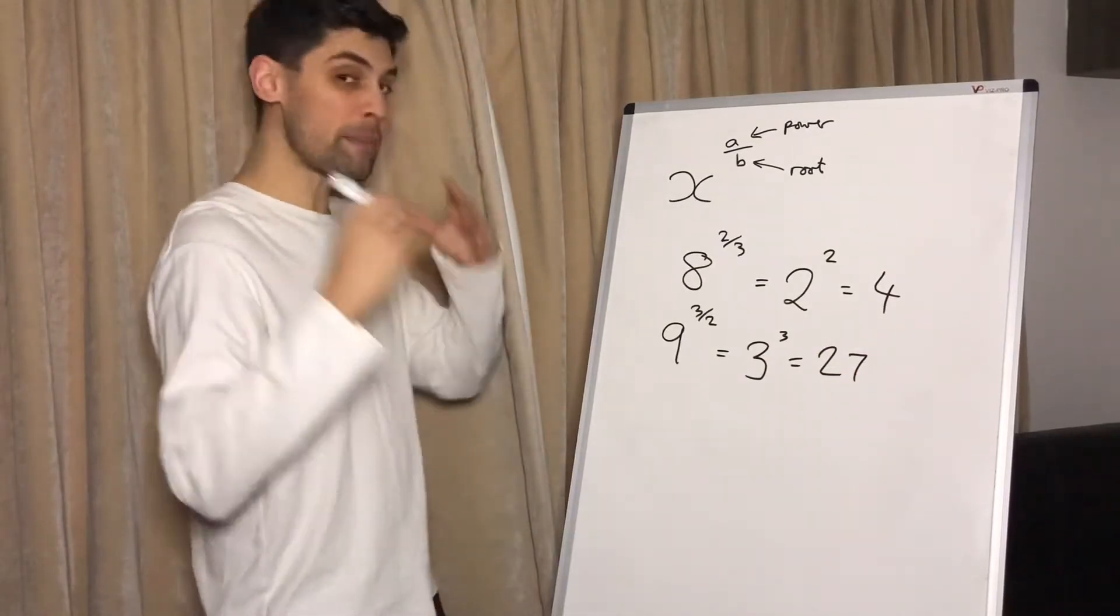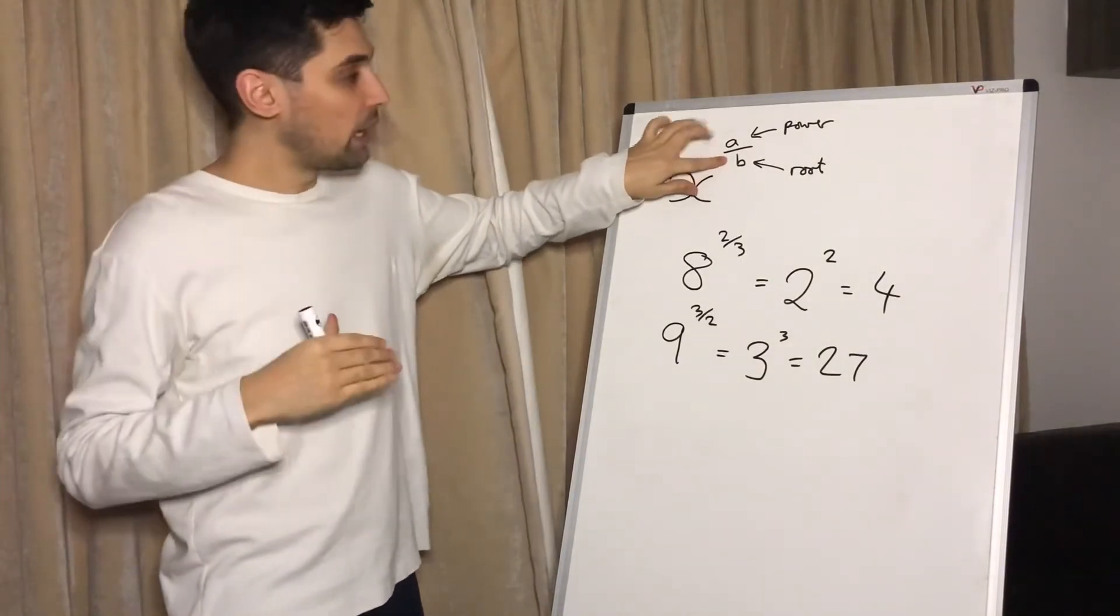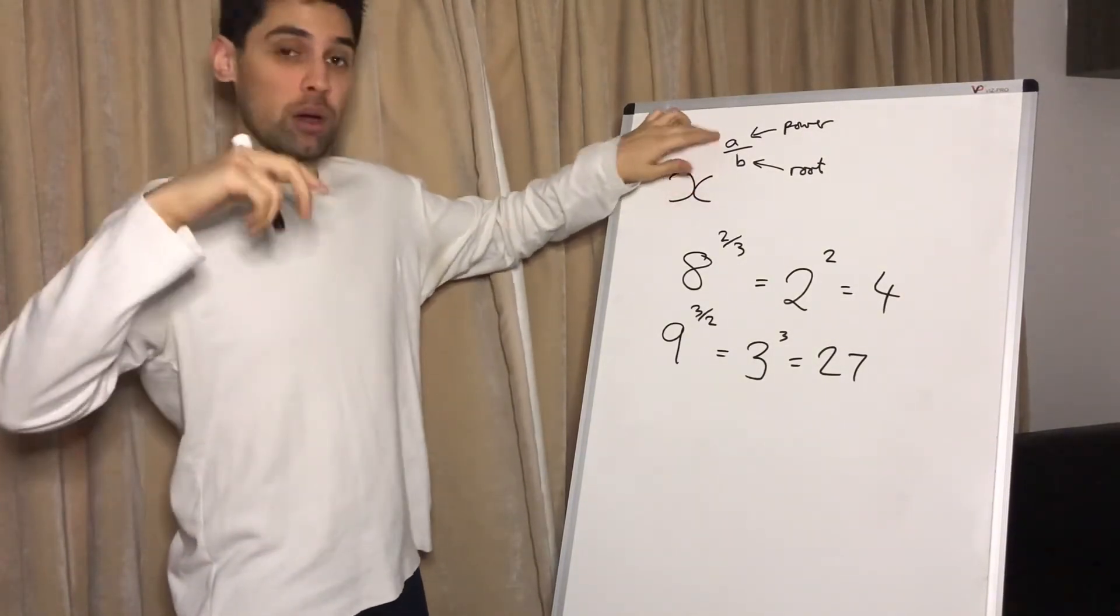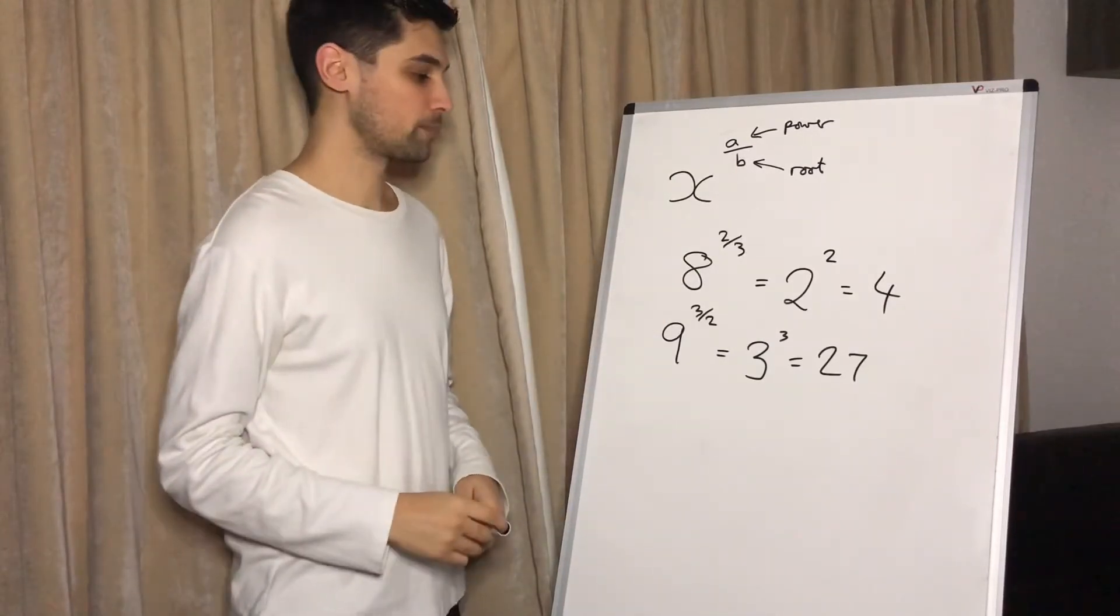So if you can remember that rule, what goes on the bottom is the root underneath the soil of the flower and what goes above is the flower, rhymes with power. Then that will really help you remember how to do this. Let's do a couple more examples.